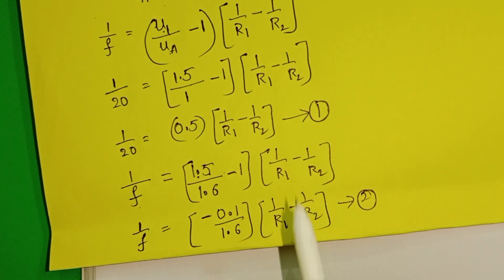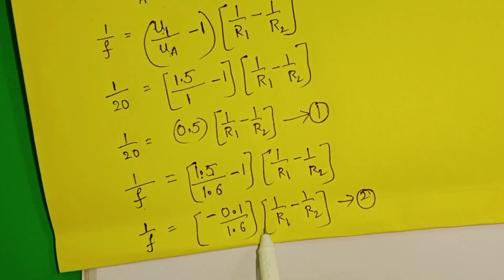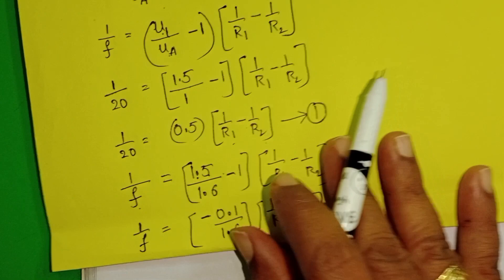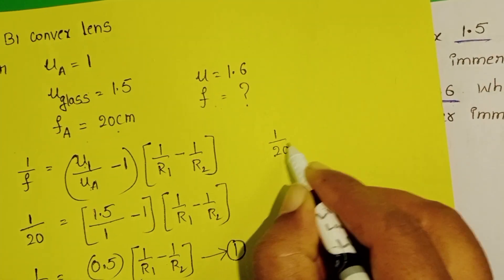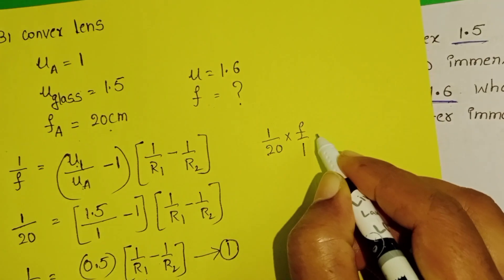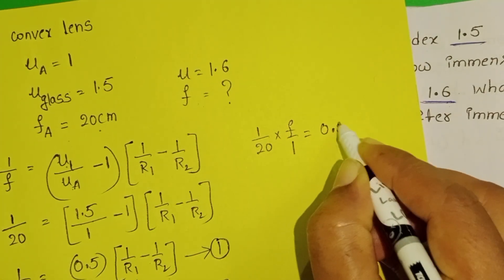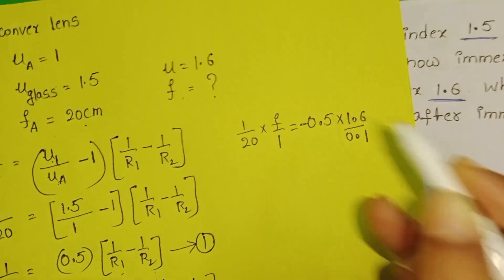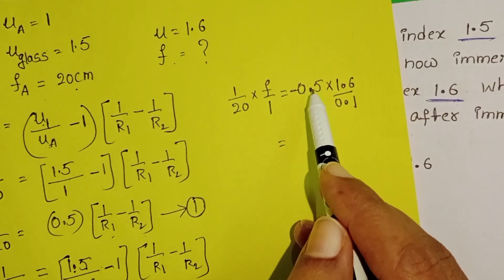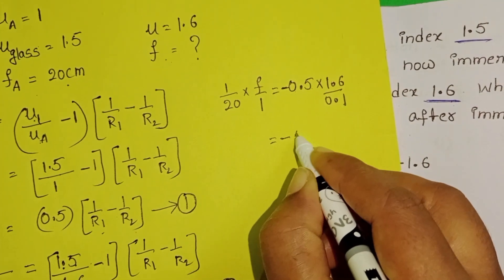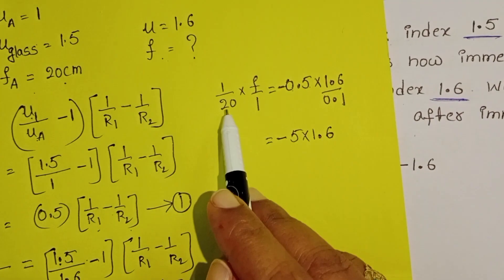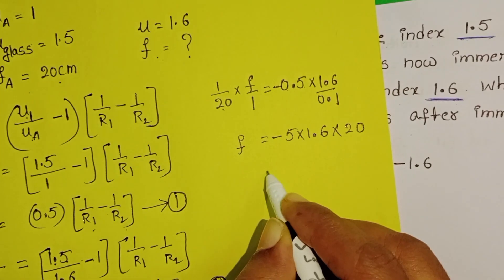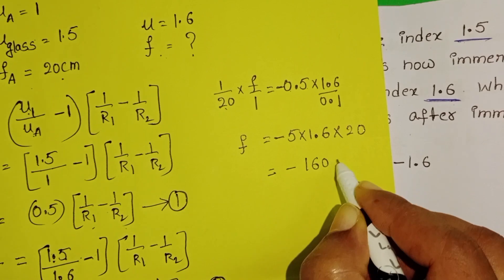Now divide equation 1 by equation 2. The (1/R1 − 1/R2) terms cancel. The remaining expression gives F/20 = 0.5 × 1.6 / 0.1, which equals 0.5/0.1 × 1.6 = 5 × 1.6 = 8. Therefore F = −160 cm.